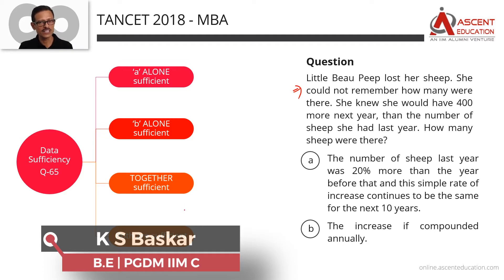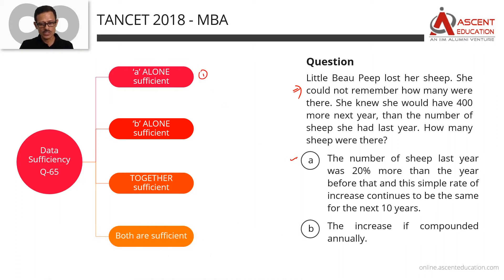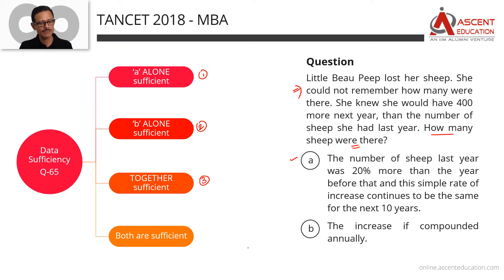In this video, we have 4 answer options. Answer option 1: Statement A alone is sufficient, B is not. Answer option 2: B alone is sufficient, A is not. Answer option 3: Together the statements are sufficient — A alone is not sufficient, B alone is not sufficient — then we go with 3. Answer option 4: Both statements are independently sufficient.